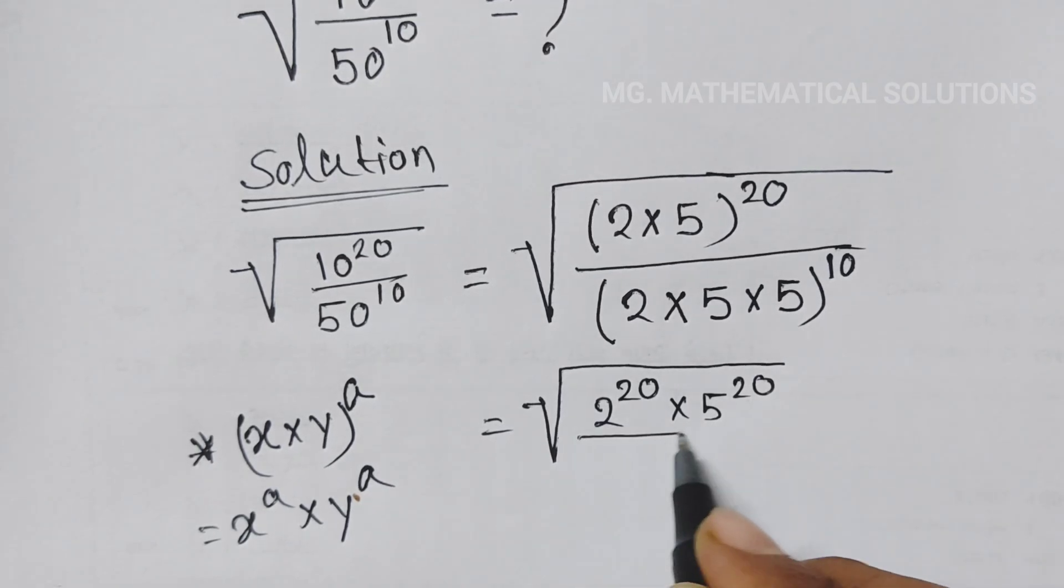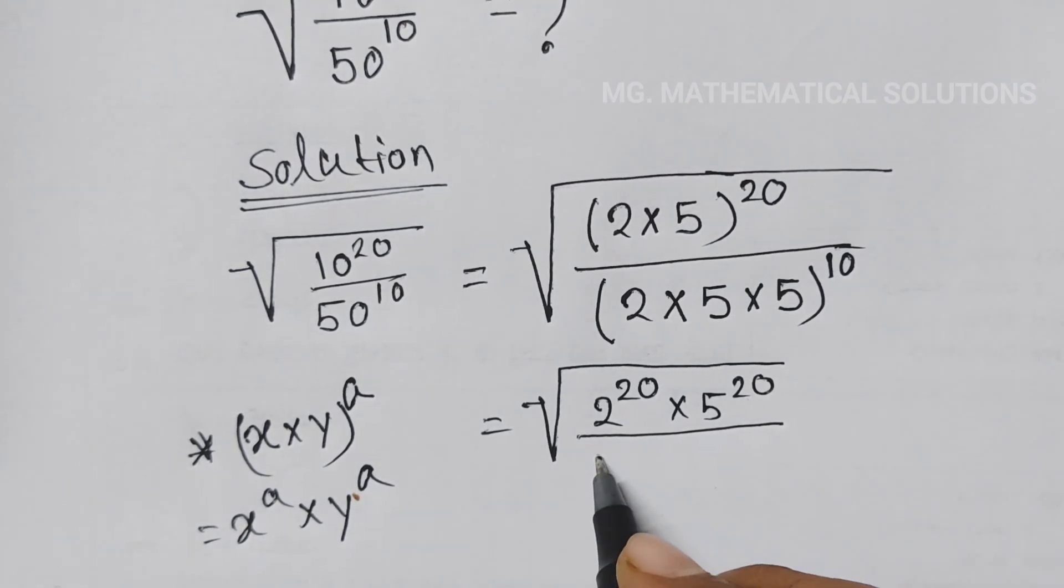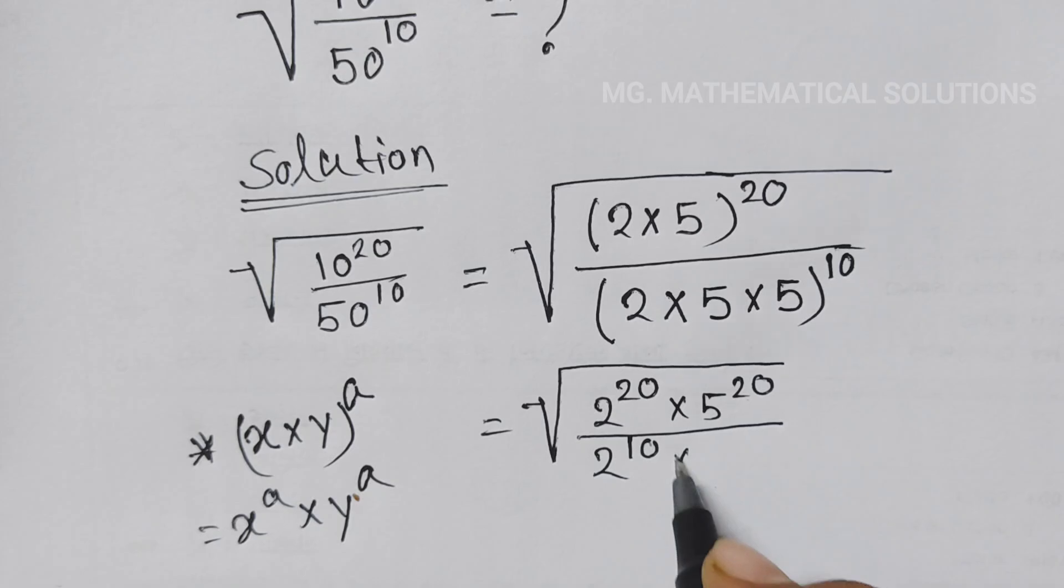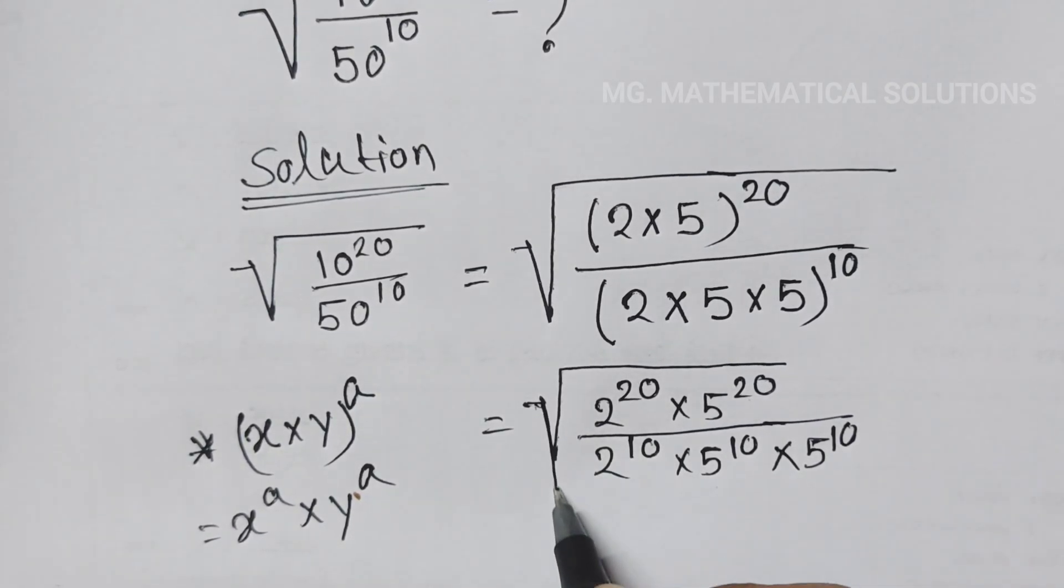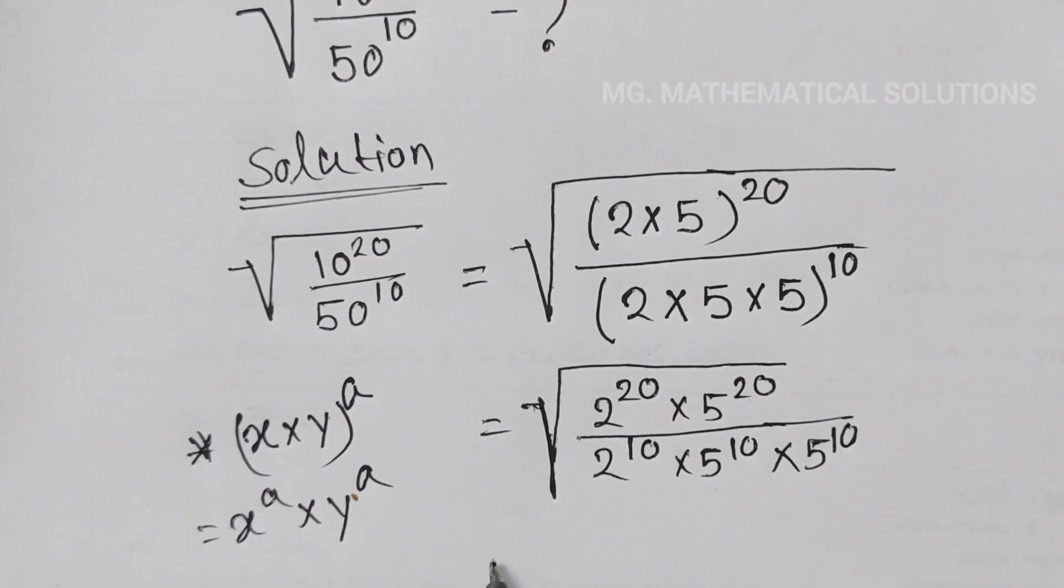...divided by 2 to the power 10 times 5 to the power 10 times 5 to the power 10.